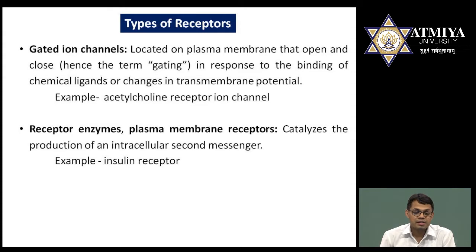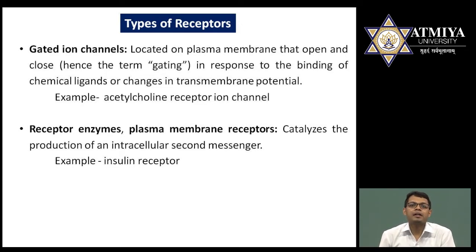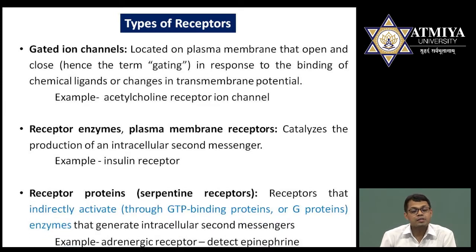The second type is receptor enzyme, or plasma membrane receptors. A famous example is the insulin receptor. Insulin plays a very important role in maintaining glucose levels in the body. These belong to the receptor enzyme or plasma membrane receptor class. The receptor itself acts as an enzyme — once receptors have enzymatic activity, they are known as receptor enzymes.